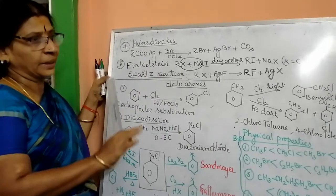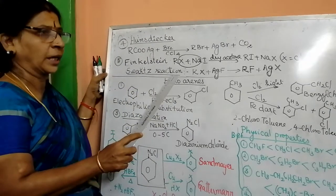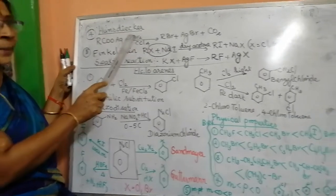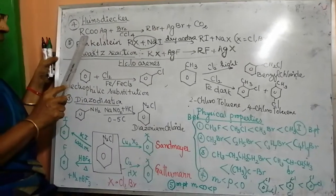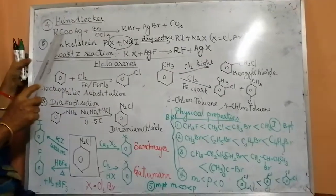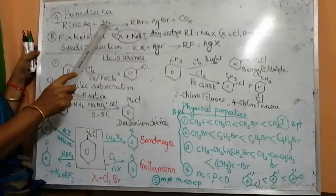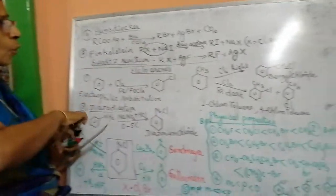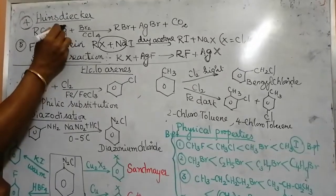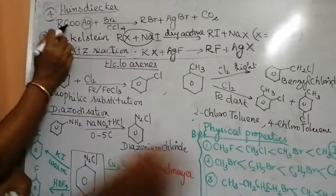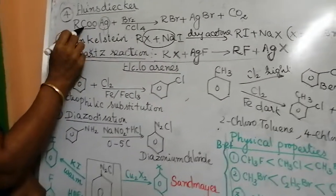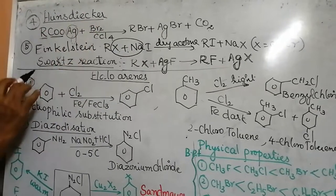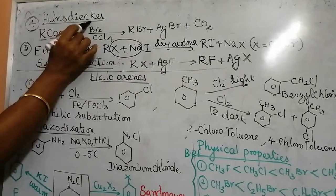In this video, we have seen three methods of preparation of haloalkanes. Now two more methods are also there. Hans-Dyekin method: In the Hans-Dyekin method, we are taking the silver salt RCOO-Ag. When treated with bromine and carbon tetrachloride, one of the bromine will attach to the R and Ag will take another Br, and you will get CO2. R-Br, Ag-Br and carbon dioxide will come out. This is called Hans-Dyekin method.